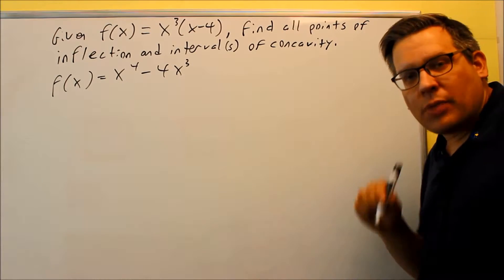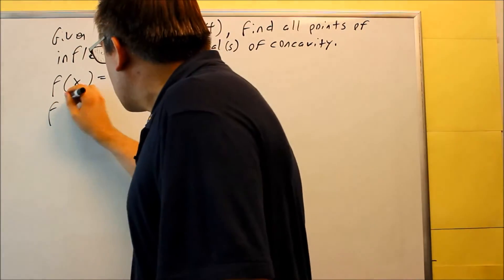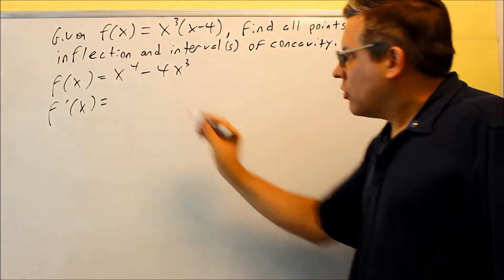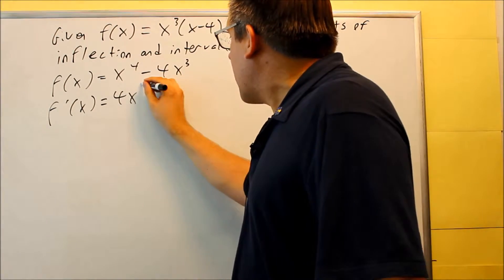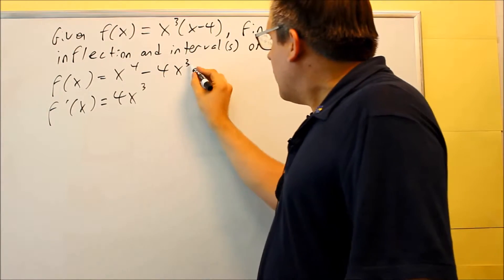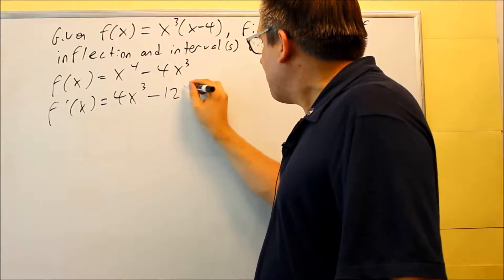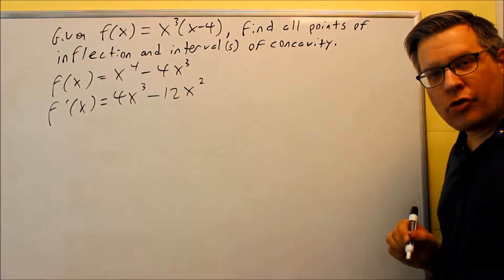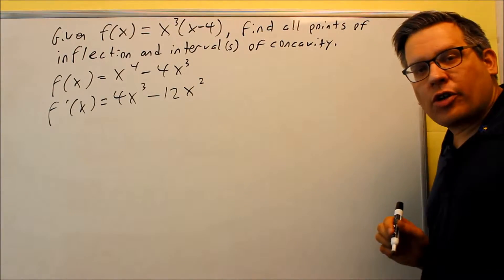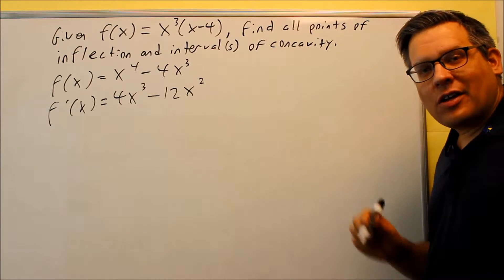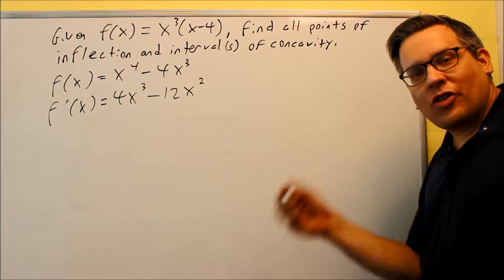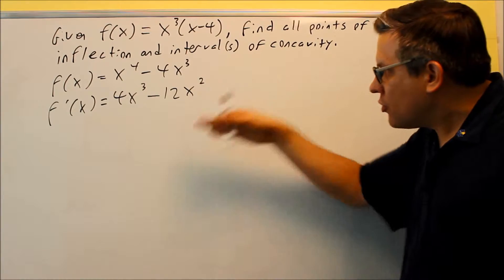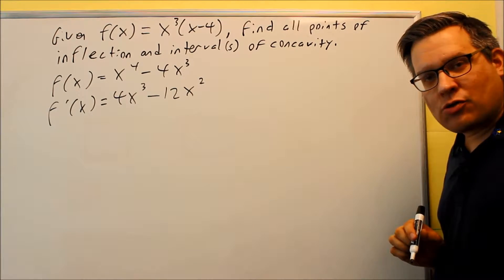Since we've done it this way, we don't need to use the product rule — we can just use the power rule. We're going to take the first derivative: 4 comes down, x to the third, and 3 times 4 is 12x squared. That's your first derivative. The first derivative would be used to find increasing, decreasing, relative max and min, but we don't have to do that in this problem, so we're moving directly on to the second derivative.